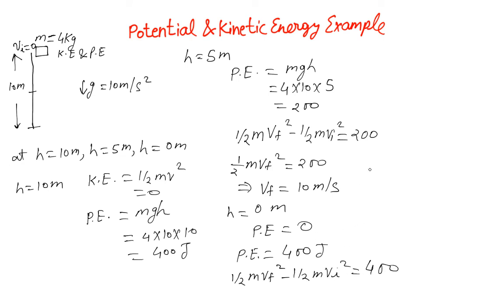Then what do we get? We get half mvf squared. Now this vf is different from this vf. This vf is for 5 meters and this vf is for 10 meters.